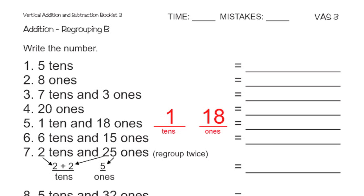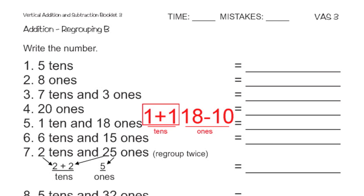Can I regroup? Yes. I can take 10 away from the ones column and add 1 into the tens column. So 18 minus 10 is 8, and 1 plus 1 is 2, so my final answer is 28.